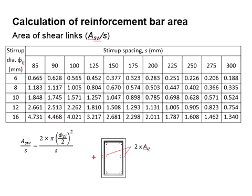The area of the shear link has to be multiplied by two due to the two effective cross-sectional area of the link.